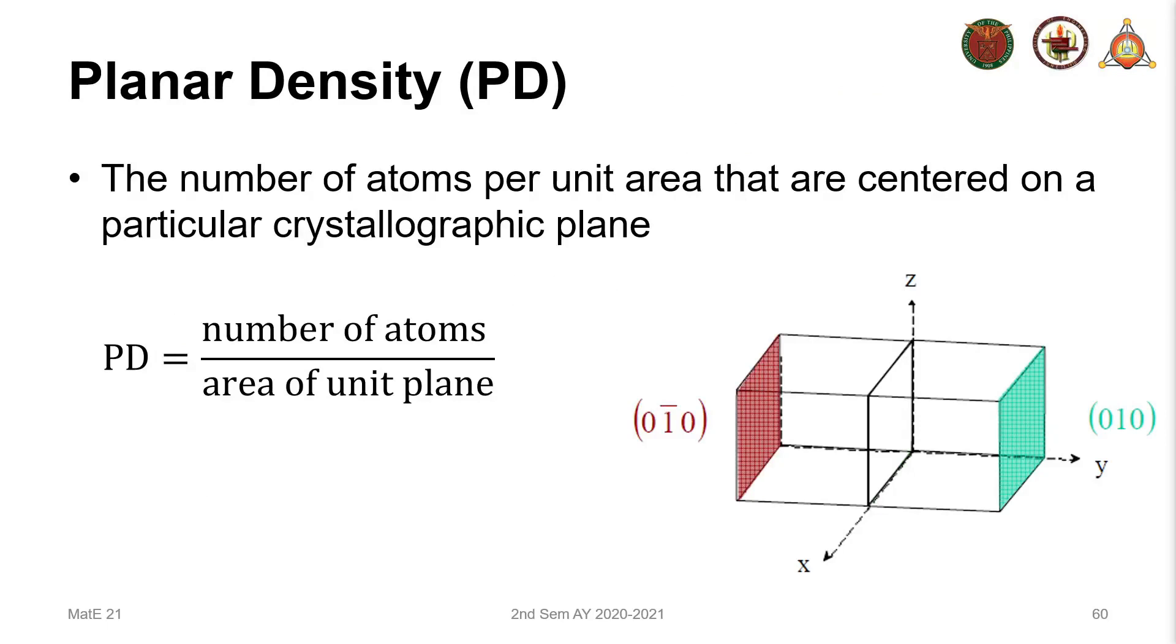Now let's go to the planar density. Like the linear density, this is a measure of the packing of atoms, but now we're considering a crystallographic plane. The planar density is the number of atoms per unit area that are centered on a particular crystallographic plane. The planar density has a formula similar to that of the linear density, but instead of using the length, we're using the area of the unit plane.